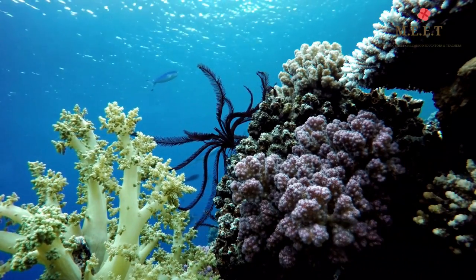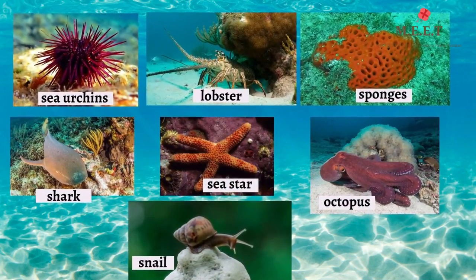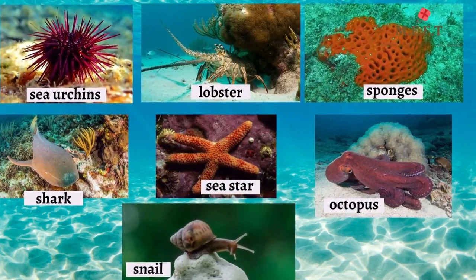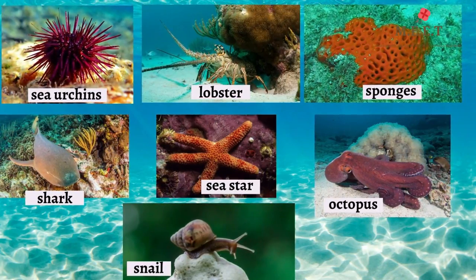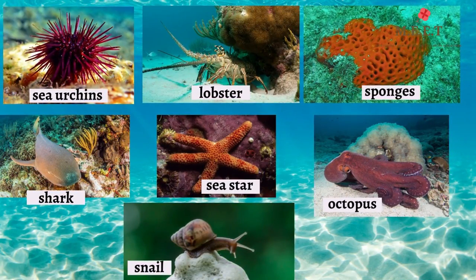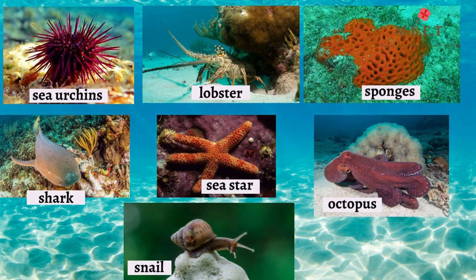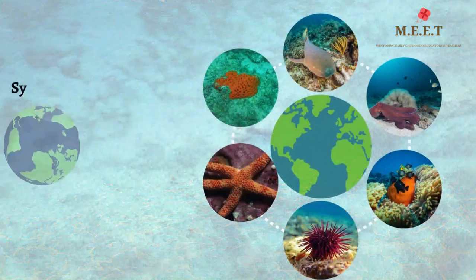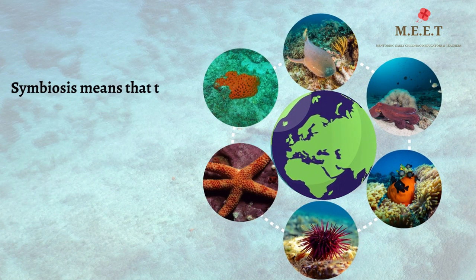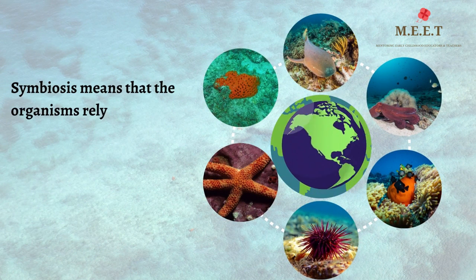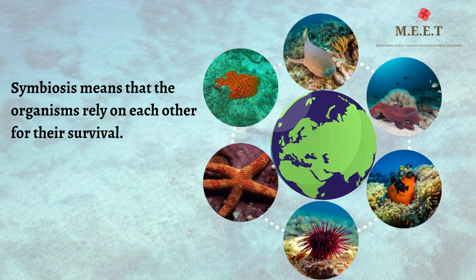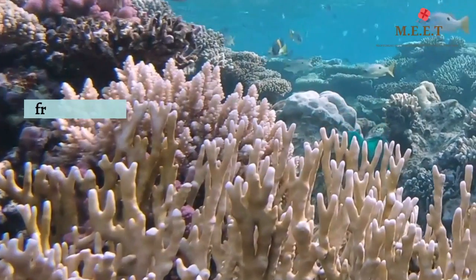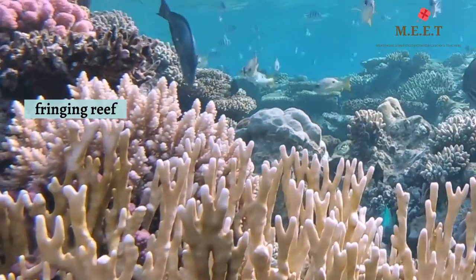How amazing! Sea urchins, sea stars, sponges, sharks, lobsters, octopus, and snails are a few of the abundant animals that live together amongst these reefs. A word that describes this is symbiosis. Symbiosis means that the organisms rely on each other for their survival. Let's take a look at the different types of reefs.